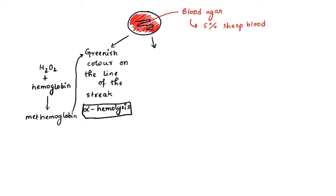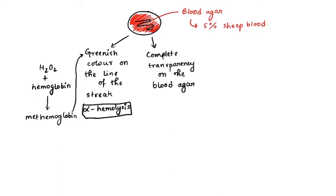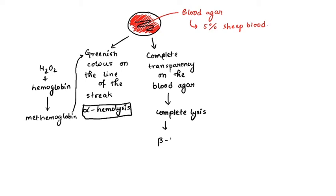In some cases, on the blood agar where you have streaked the bacteria, you will see complete transparency along the line of the streak. When there is complete transparency of the blood agar, we infer that this species of bacteria has done a complete lysis of the RBCs. We call this beta hemolysis.